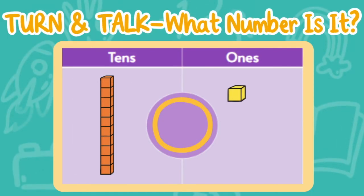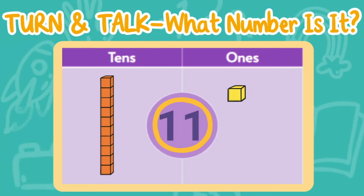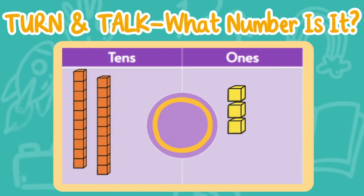Now we're going to practice a different way. We're going to look at the tens and ones and you are going to decide what number it is. Turn and talk with your partner — look at the ones and tens, what number is this? It's the number 11! There is one one and one ten, that means it is the number 11. Let's try another number. I see three ones and two tens — that makes this number 23.